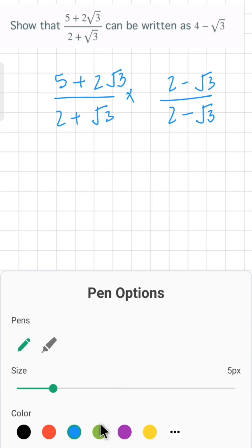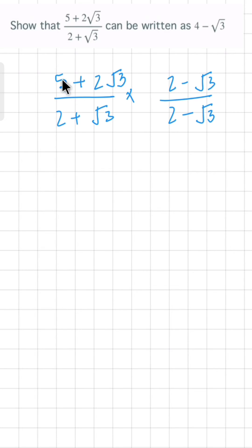Let's see what we get. When 5 multiplies 2 we get 10. When 5 multiplies -√3 we get -5√3. When 2√3 multiplies 2 we get 4√3. When 2√3 multiplies -√3 we get -6.